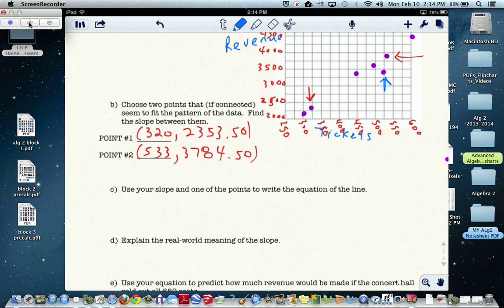So if we're going to calculate the slope, you would use your calculators to do this work. You're going to do the y's minus the y's and x's minus the x's. So 3784.50 minus 2353.50, all over 533 minus 320.